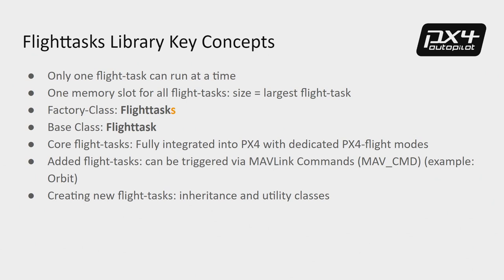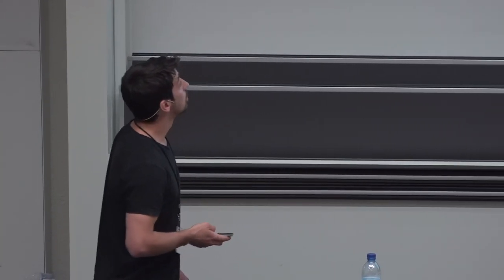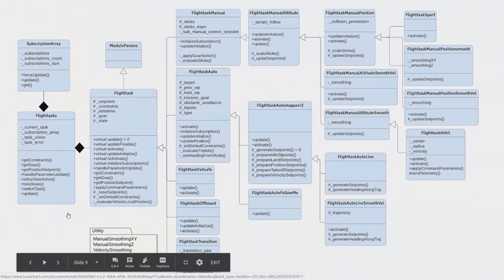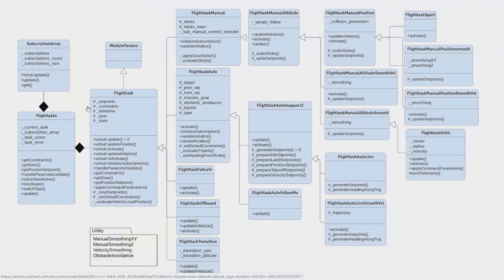To create a new flight task there are currently two options: either use inheritance to inherit functionalities from an already existing task, or use the utility library which provides utility classes and functions. Here you can see a UML diagram of the current existing flight task library in PX4. It's not complete but gives a good overview. On the left we have our factory class FlightTasks, which contains our base class FlightTask, and to the right we have all the existing tasks.